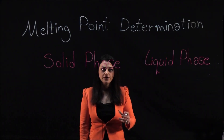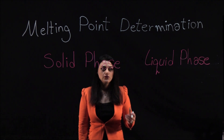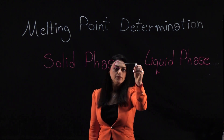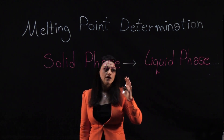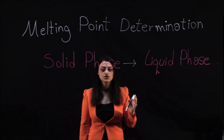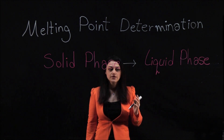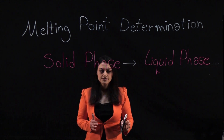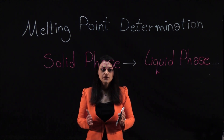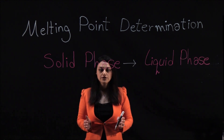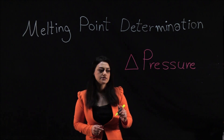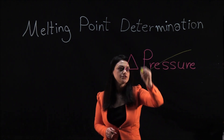A compound's melting range is the temperature range where the compound transitions from solid phase to liquid phase. The temperature at which melting occurs can depend on the structure of the compound, which exemplifies the relationship between structure and chemical properties. This is why different compounds have different melting points. Note that unlike the boiling point, melting point is unaffected by environmental pressure changes.